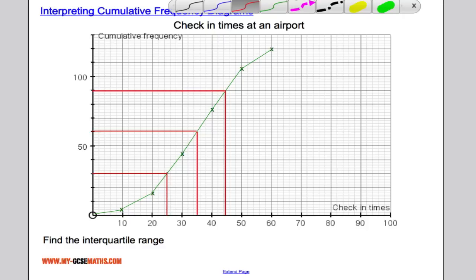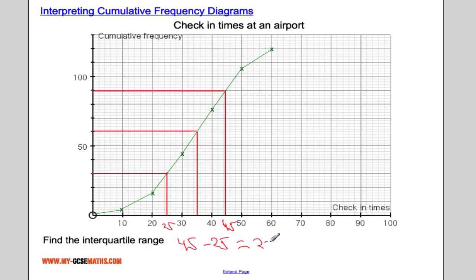And let's get those figures out. So the upper quartile was, I make that out to be roughly 45 minutes. The lower quartile is roughly 25 minutes. So we'll do 45 take away 25. And that gives us 20 minutes.